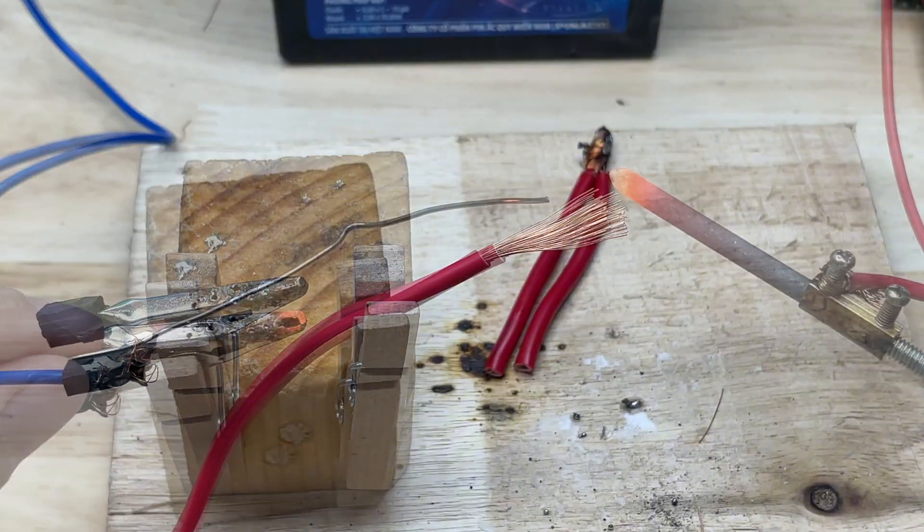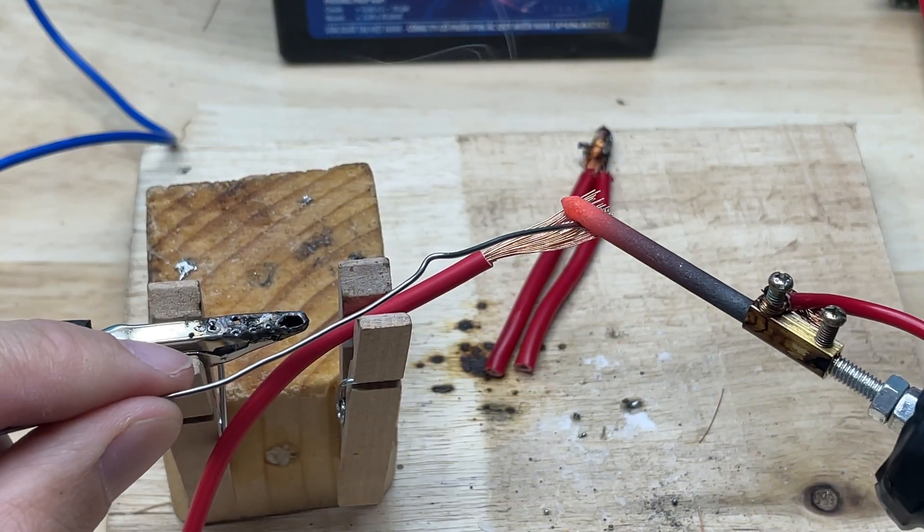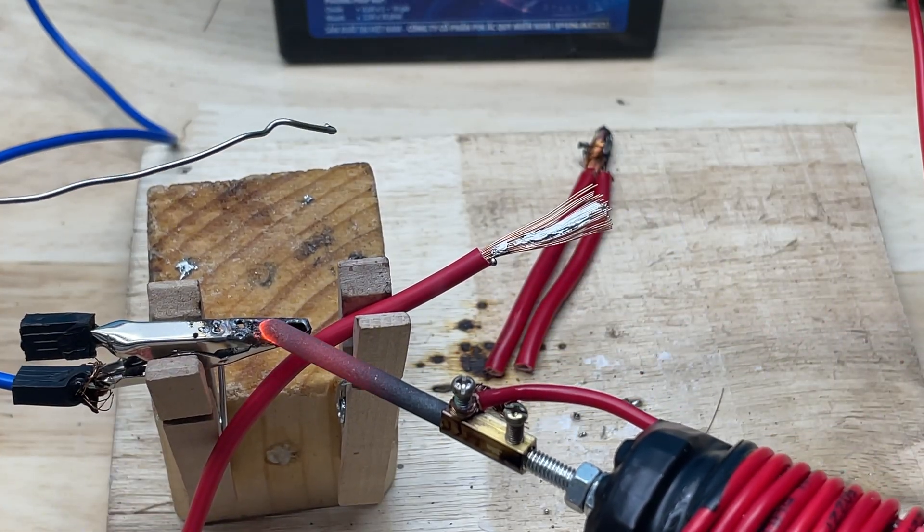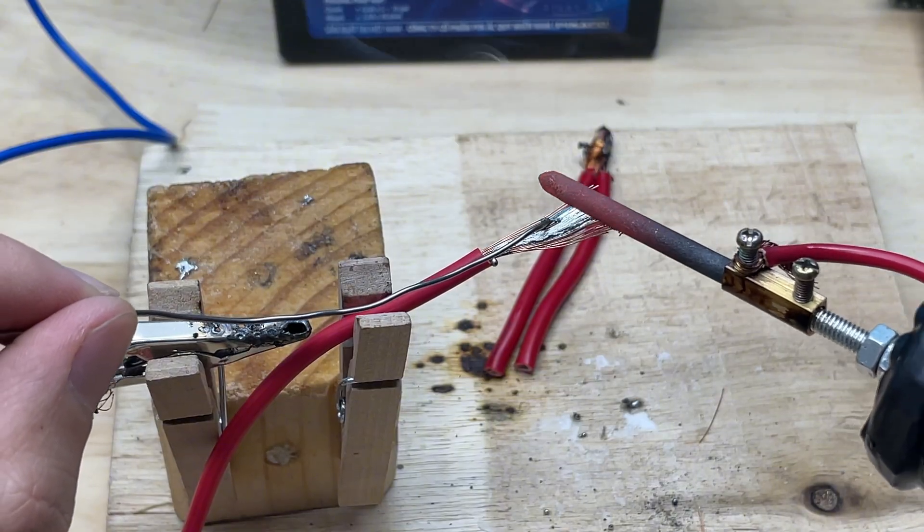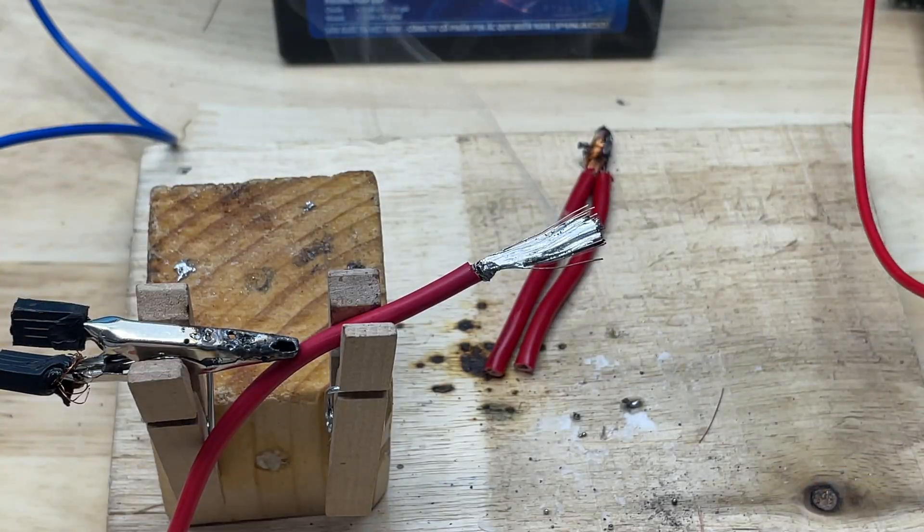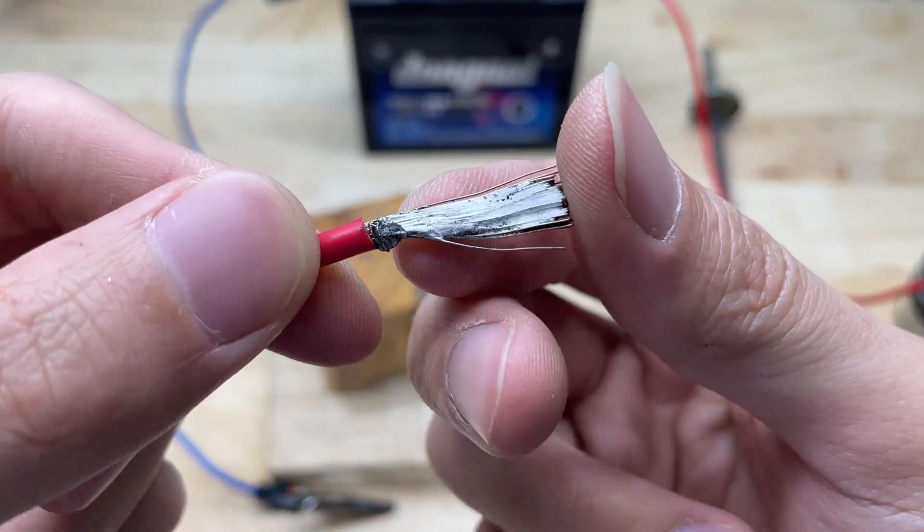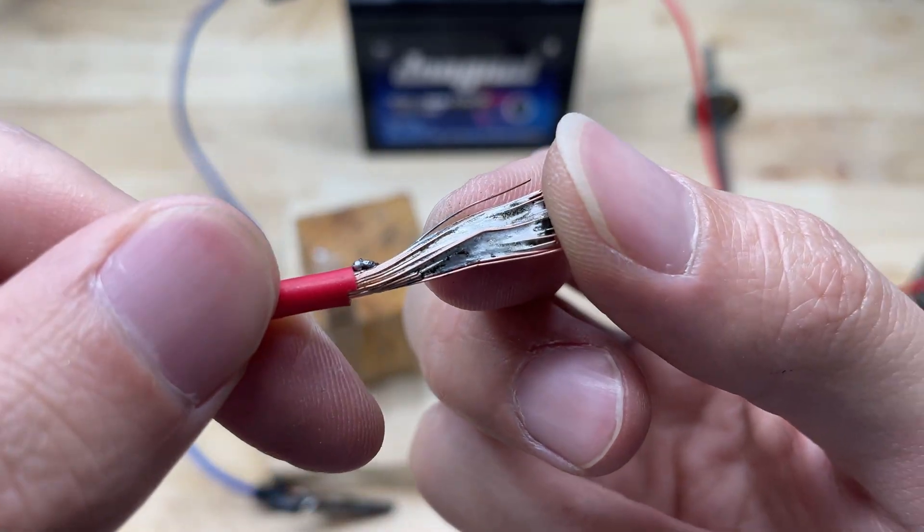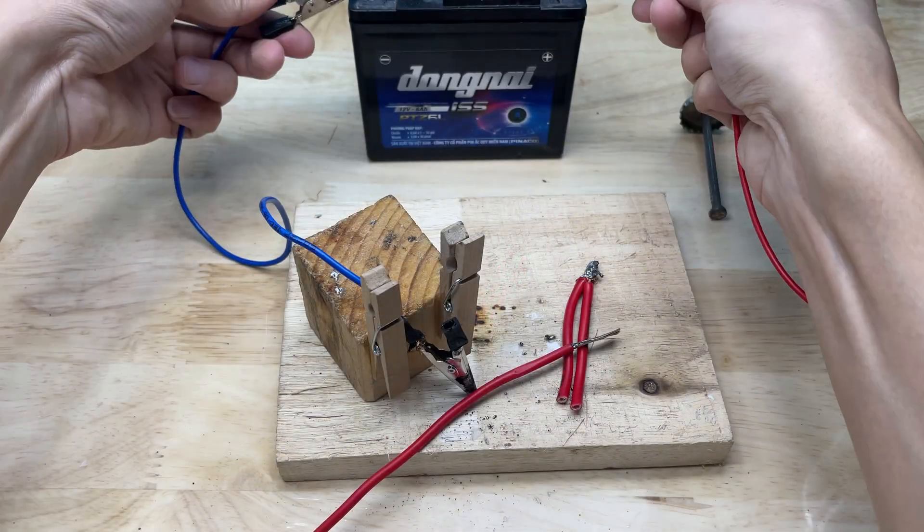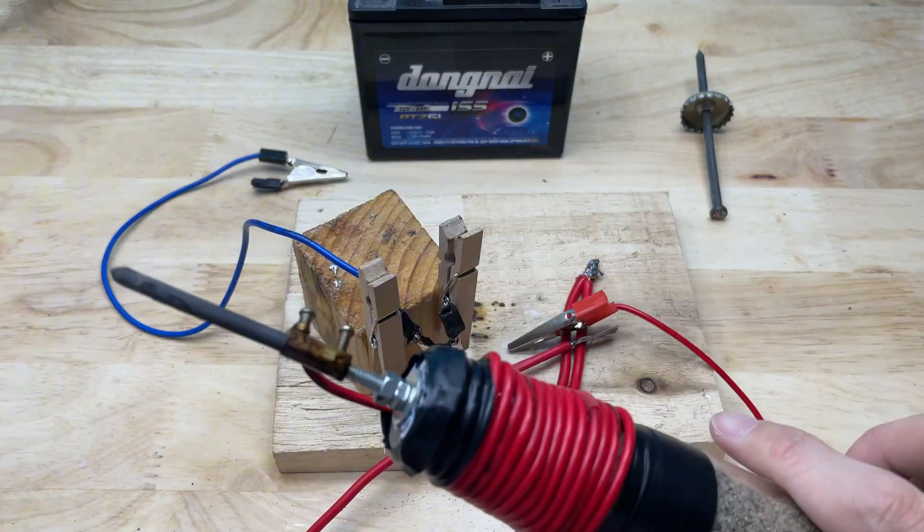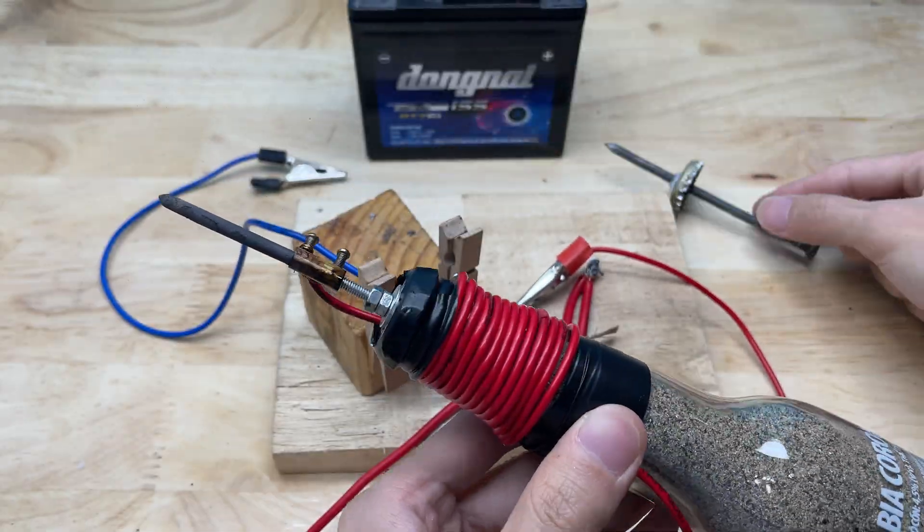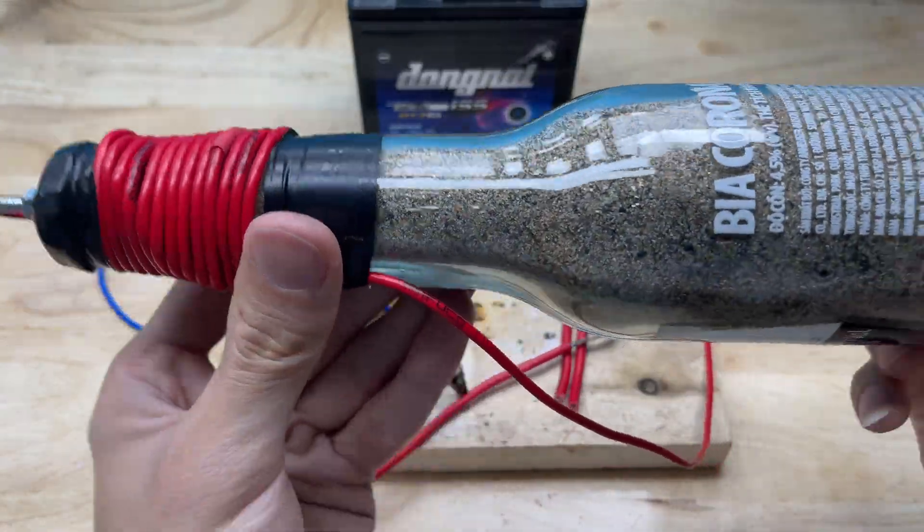After completing the setup and testing both welding tips, the DIY soldering tool is fully functional and versatile. By simply switching caps, it can adapt to different types of tasks, whether precise, quick welds with a nail tip or more heat-demanding joints with a battery core tip. The combination of a sturdy glass bottle base, secure internal components, and neatly routed wiring creates a compact, reliable, and safe-to-handle tool. This project not only demonstrates the potential of repurposing everyday materials, but also provides a hands-on solution for small repairs and DIY electronics work at home.